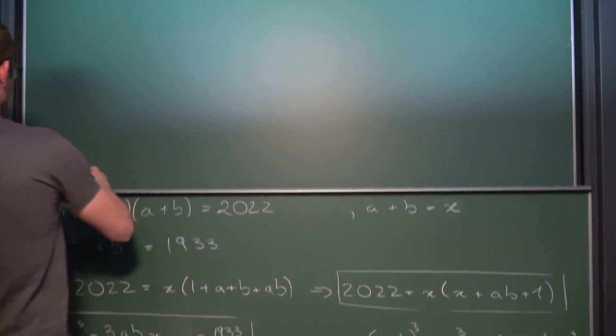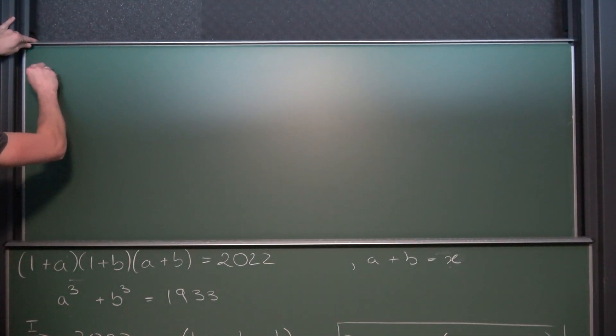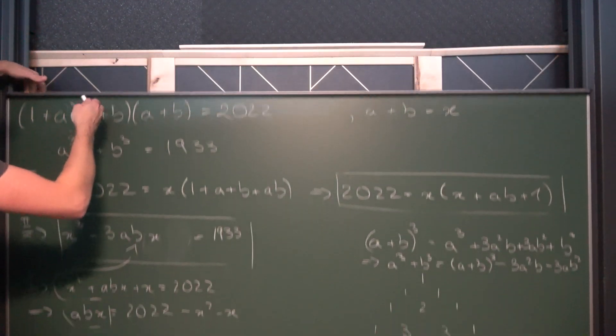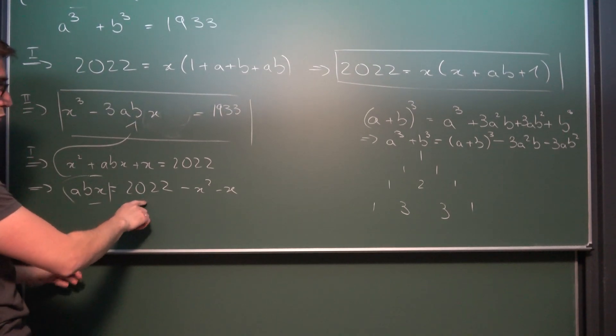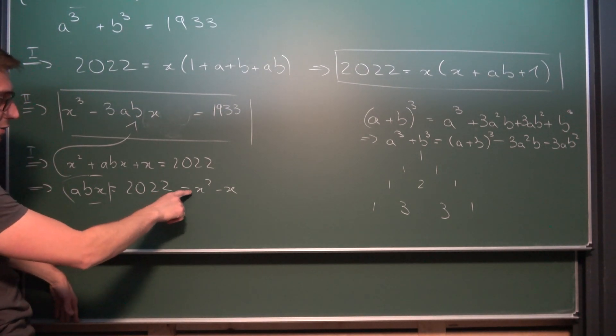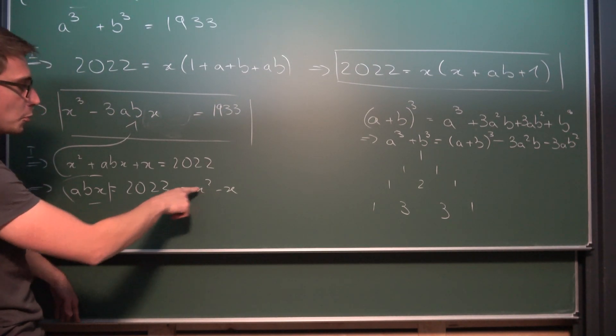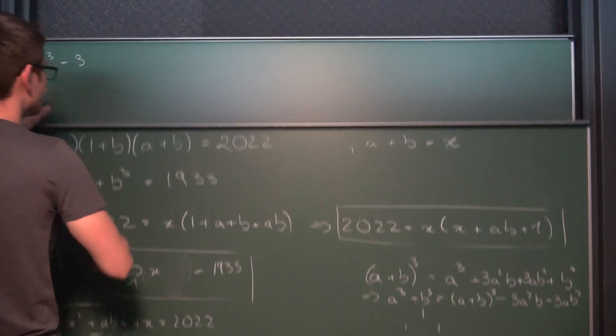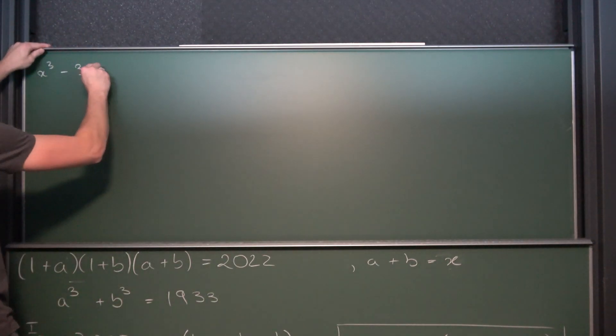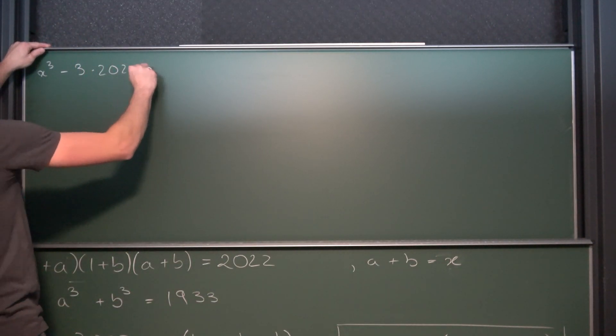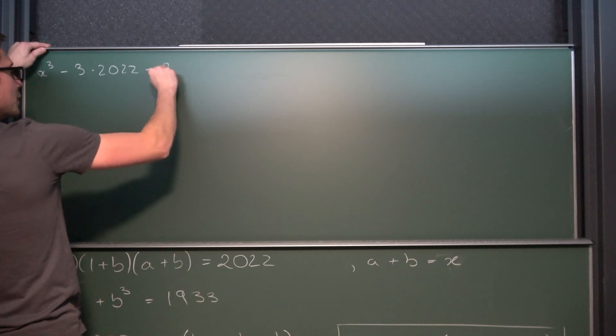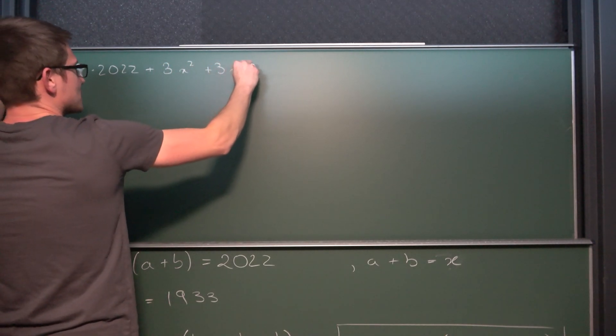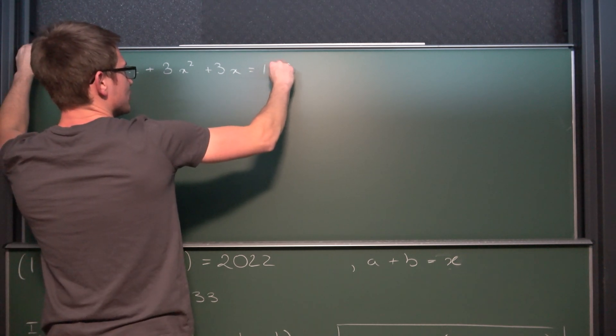Now if you plug this in what we are going to get is x to the third power minus three times 2022. And the negative signs are going to turn into positive signs once you multiply everything by the negative three. So three times 2022 plus and then we are going to get three times x squared plus three times x is equal to 1933.